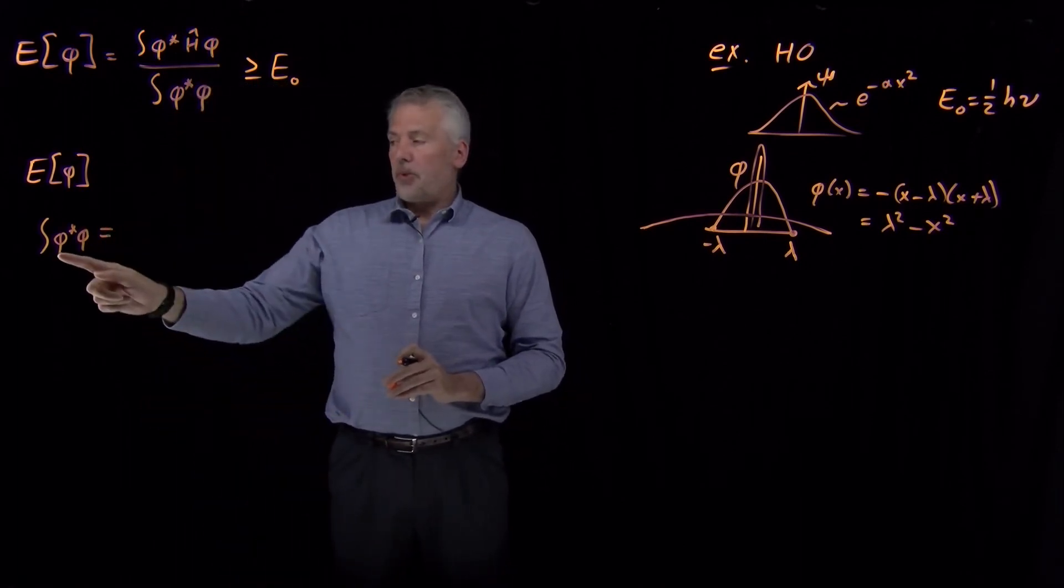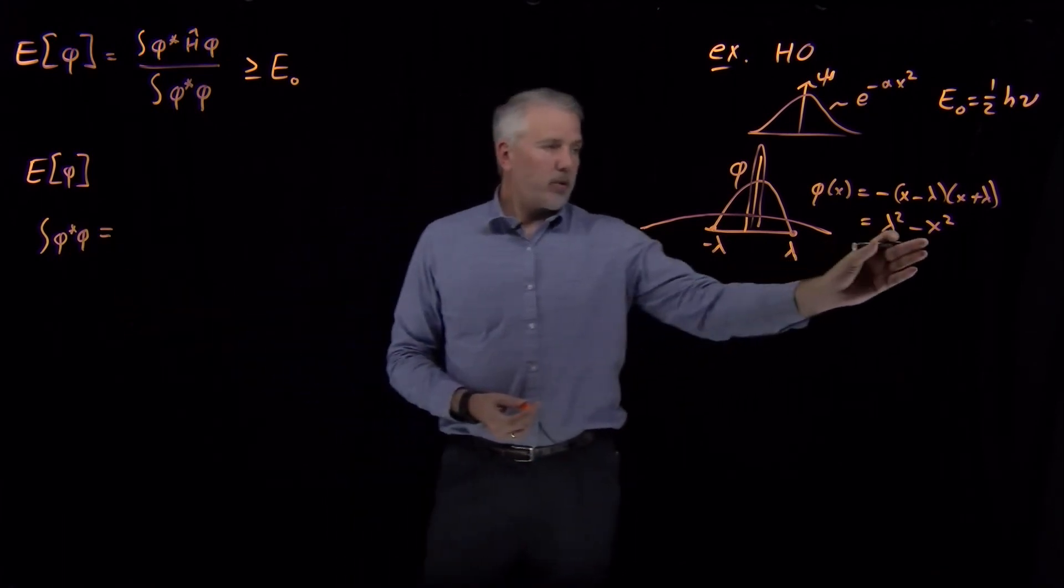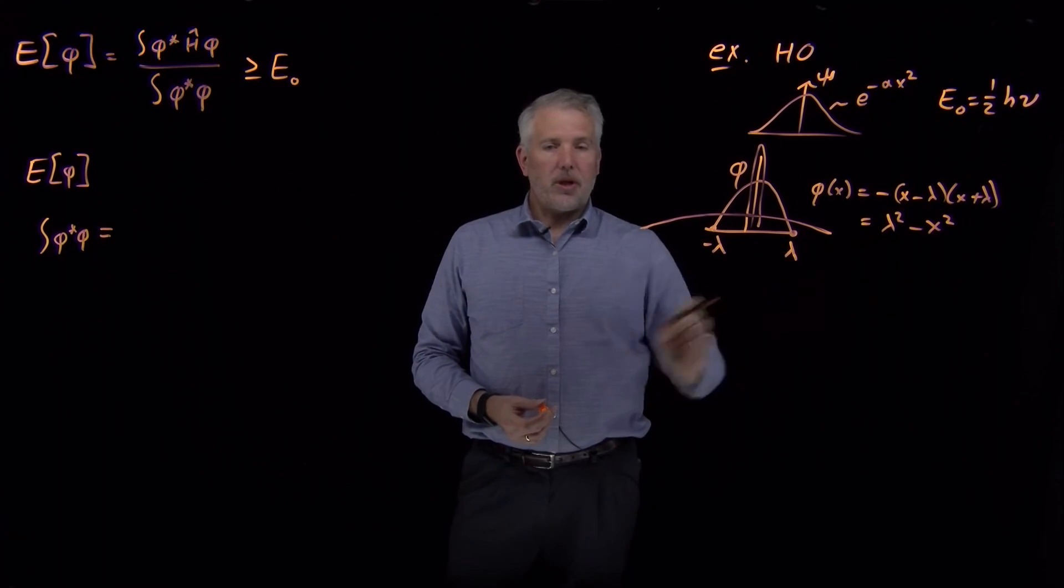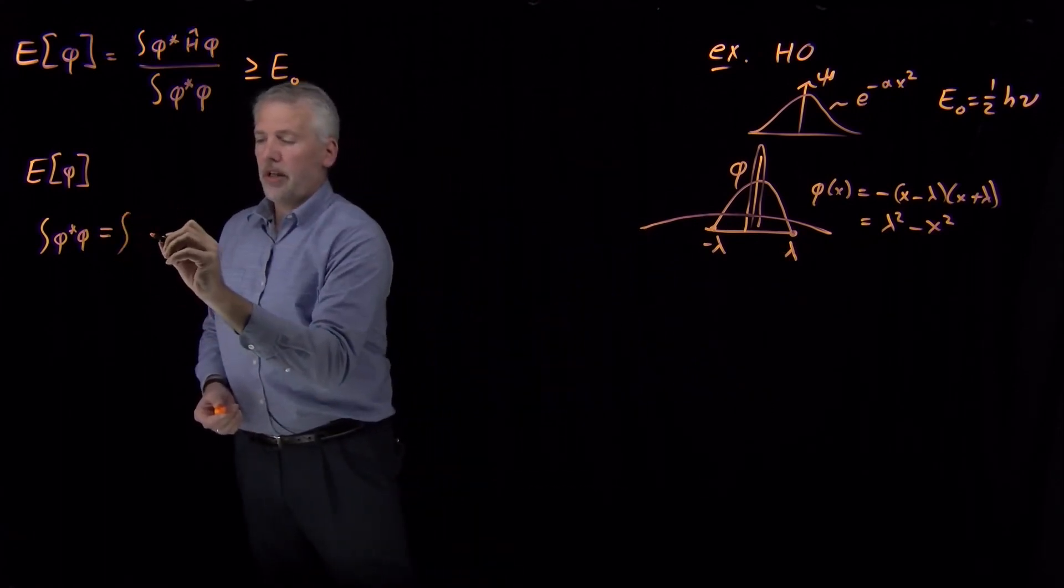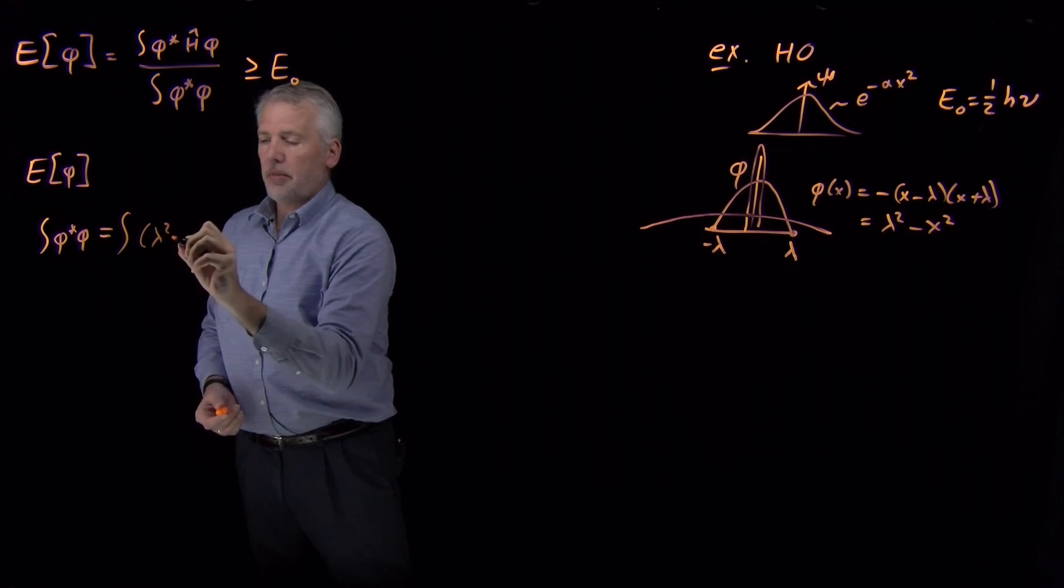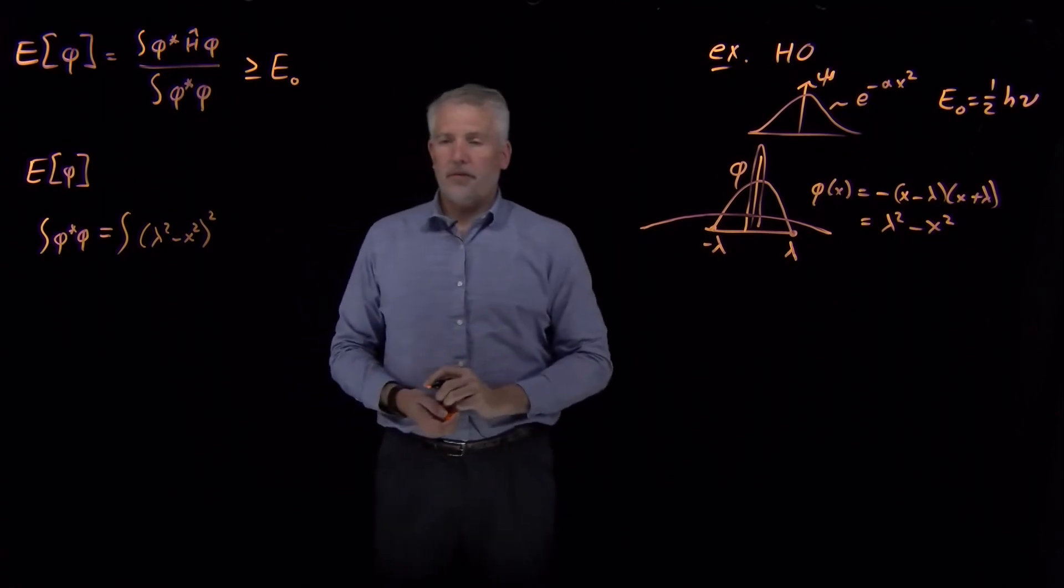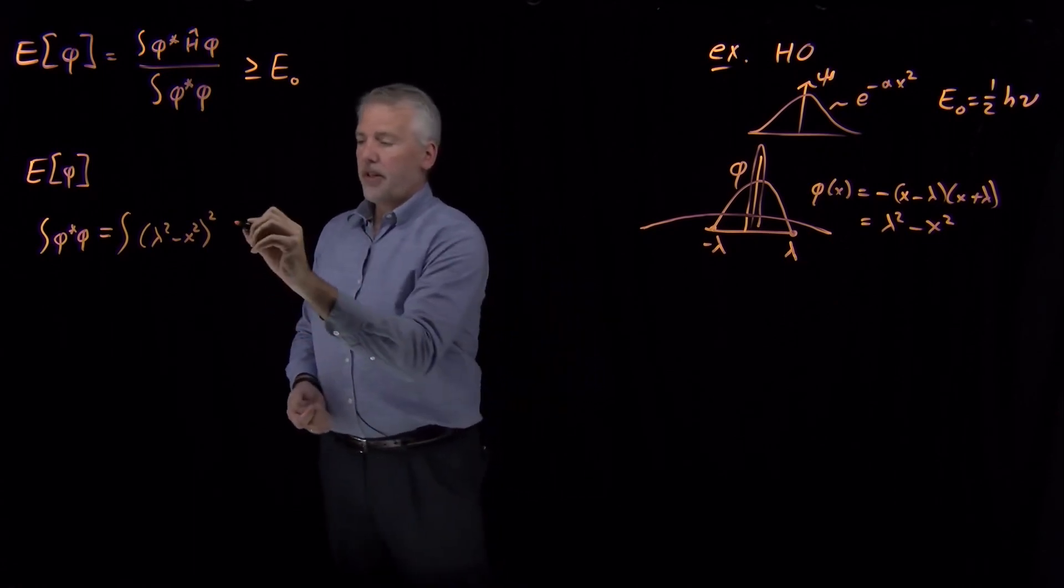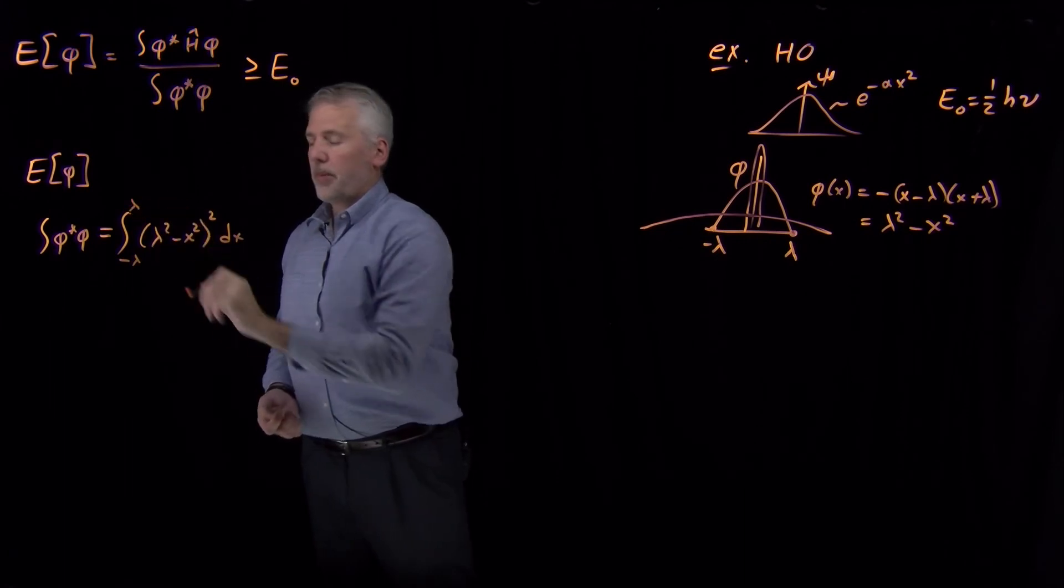The overlap integral between the trial function and itself, its own complex conjugate. In this case, we don't have to worry about the complex conjugate because there's no complex numbers in my wave function. I'll write down that it looks like lambda squared minus x squared for the trial function times the same thing again.